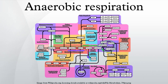Anaerobic respiration is used mainly by prokaryotes that live in environments devoid of oxygen. Many anaerobic organisms are obligate anaerobes, meaning that they can respire only using anaerobic compounds and will die in the presence of oxygen.